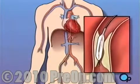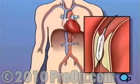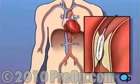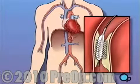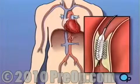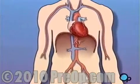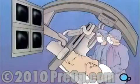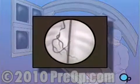Once the tube is in place, a small balloon is briefly inflated in order to widen the narrowed artery. A short length of mesh tubing called a stent is then inserted into the newly widened artery. During and after the procedure, your doctor will take x-rays in order to monitor your progress.